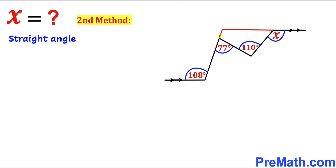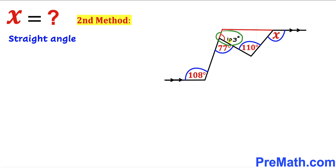We can see that this whole angle is a straight angle, equal to 180 degrees. We know that this angle is 77 degrees, so therefore this angle has got to be 103 degrees. This angle turns out to be 103 degrees.